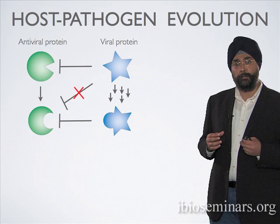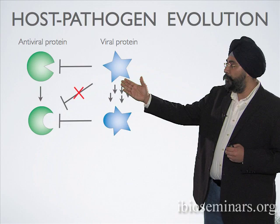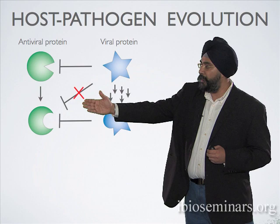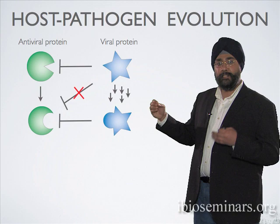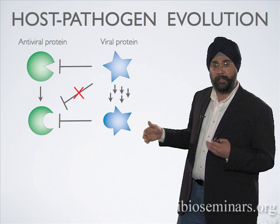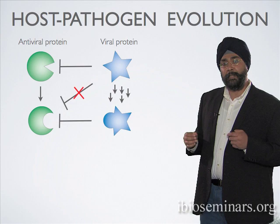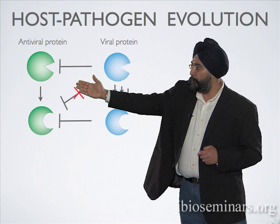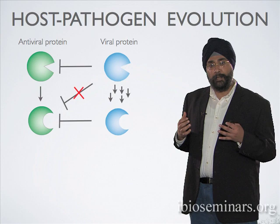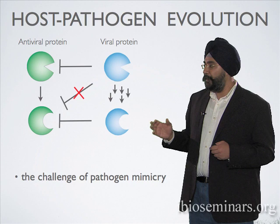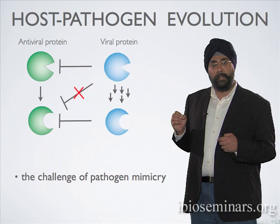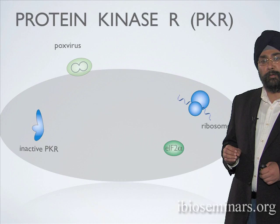We're going to consider a specialized case of an arms race where a viral protein begins to antagonize an antiviral protein. The viral protein's antagonism will force the antiviral protein to evolve to a state it can no longer defeat, which forces the viral protein to evolve rapidly to restore its antagonism. We're going to consider an even more specialized example where the viral protein used to antagonize the host antiviral protein is itself a host protein — which raises the question of how does the host distinguish between a viral mimic and its own host proteins. This is the problem of pathogen mimicry.